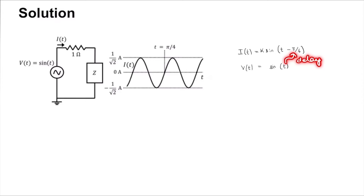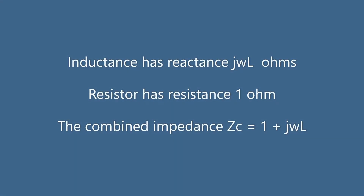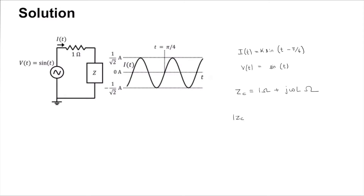The only element that can cause this delay is an inductor. So the impedance has a magnitude of √(1 + ω²L²).